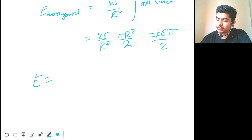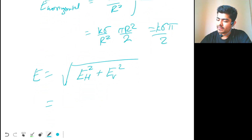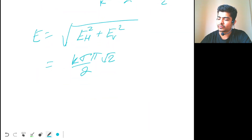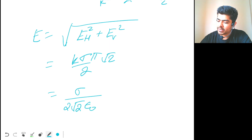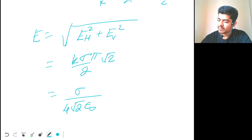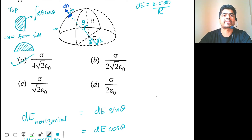Net field along horizontal is k·sigma·pi/2 and net field along vertical is k·sigma·pi/2. So E will be the square root of E_horizontal squared plus E_vertical squared. Solving this gives k·sigma·pi/2 times root 2. Putting k = 1/(4·pi·epsilon naught), we get sigma/(4·root 2·epsilon naught). This is your net electric field, so option A is the correct answer.